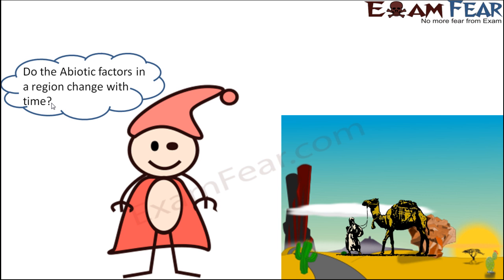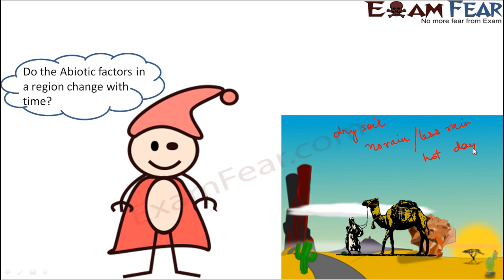Let's consider a desert. What are the abiotic factors — the non-living components — of a desert? They could include dry sandy soil, no rain or very little rain, hot days, and cold nights. These are some of the abiotic factors in a desert.